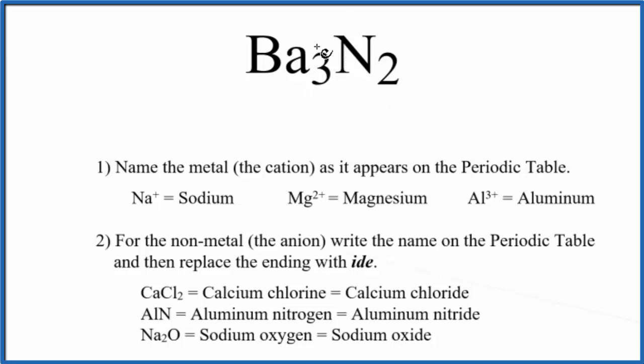Specifically, this is called a binary ionic compound because we have just two different types of atoms: barium and nitrogen. So we'll use these rules to name this binary ionic compound.